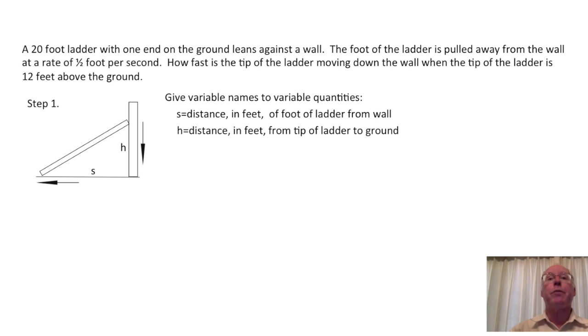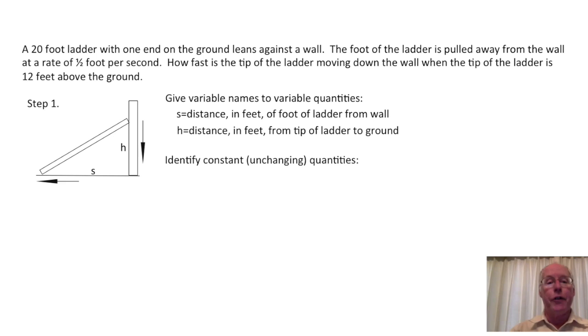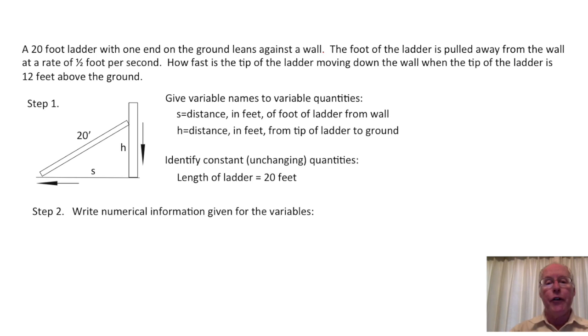Finally, in these problems there are often quantities that do not change but are important. Any such important quantities need to be noted in writing and added to your picture. We want to identify the constant unchanging quantities. In this case, it is the length of the ladder. The length of the ladder is 20 feet. We indicate that on the diagram also.